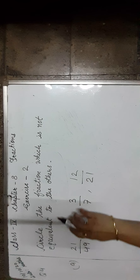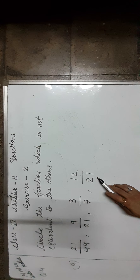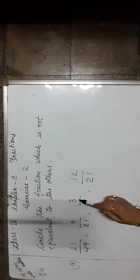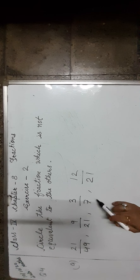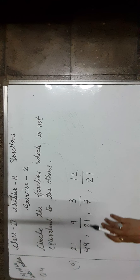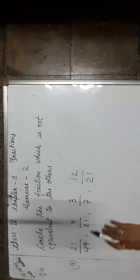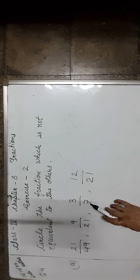Question number 4: circle the fraction which is not equivalent to others. To find out the fraction which is not equivalent, first we reduce the given fractions to their lowest term or simplest form. Here, you can see the fraction 3 upon 7 is already in lowest form, so it cannot be divided further. Let us change the other fractions to lowest form by dividing numerator and denominator by the same number.